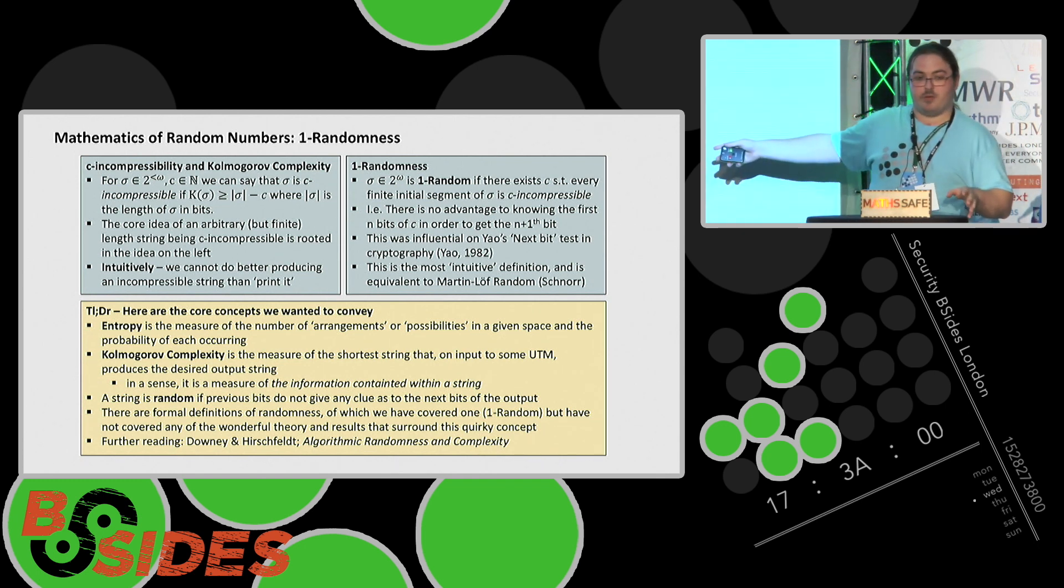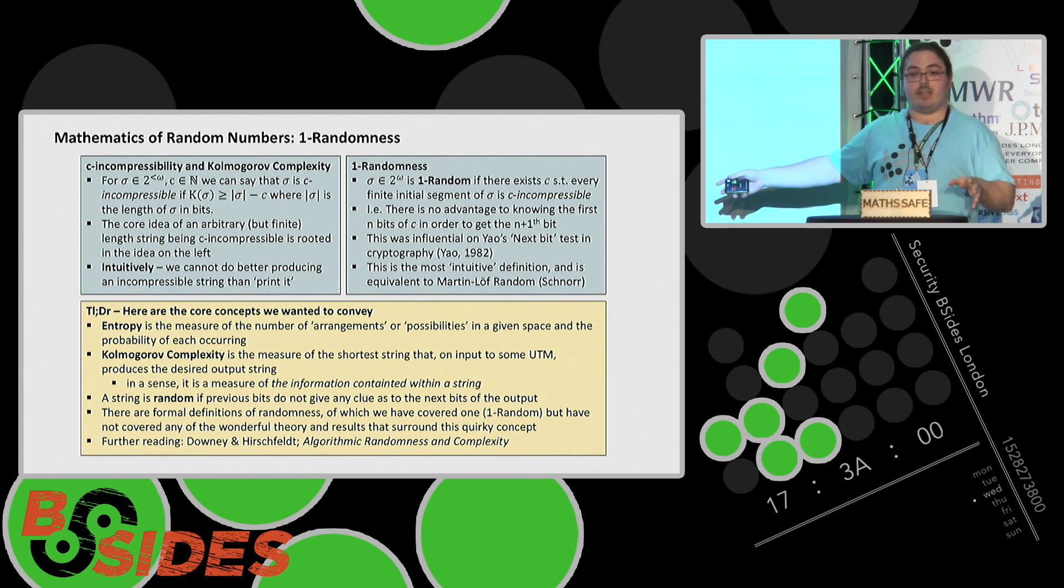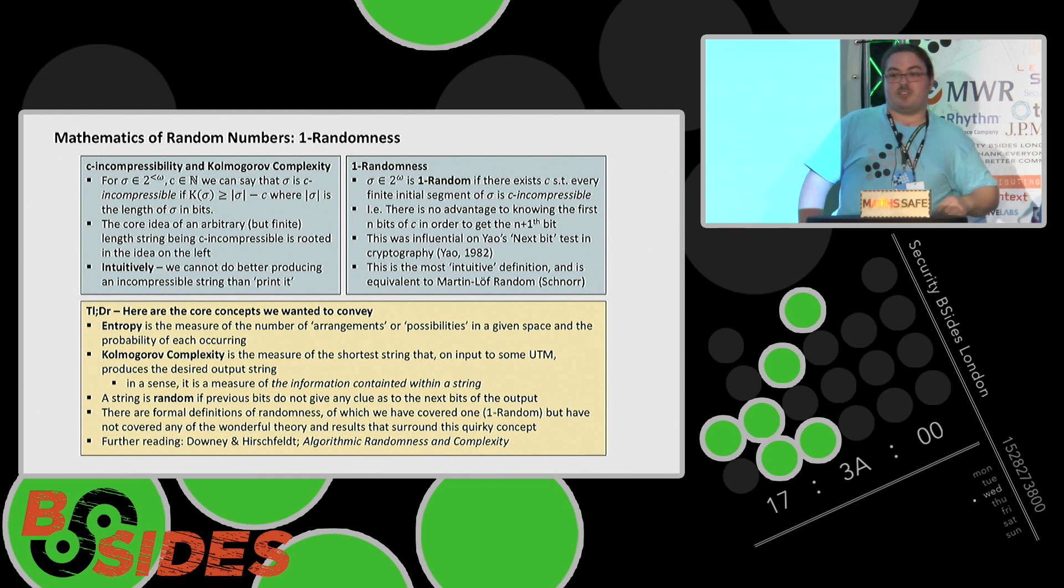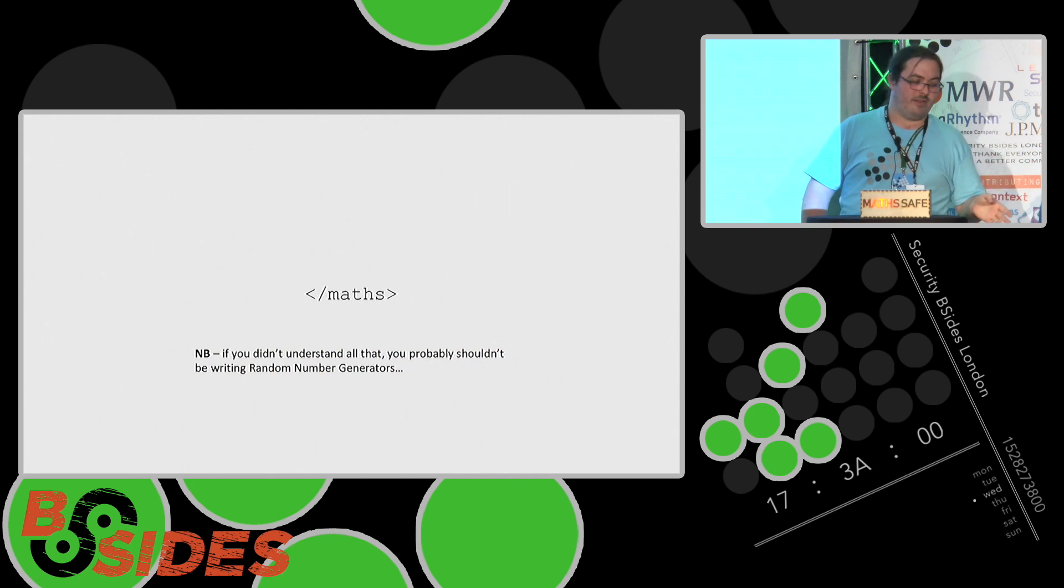Complete incompressibility leads to this. This is a mathematical definition of randomness. A string is one random. The one refers to the Turing jump of it. It's one random if I can take any initial segment and that doesn't give me a clue as to the next bit. It's always going to be C incompressible. The whole infinite string, there is a finite number C that minimizes that below its complexity. This is actually used. The YOWS next bit test is based on exactly this idea. And it's equivalent to another very important notion of randomness called Martin-Löf randomness. Here's a little summary. Entropy, the measure of a number of arrangements with a probability distribution. Complexity is basically the shortest string that we need to reproduce some other string. And randomness is a string that can't be squashed into an algorithm.